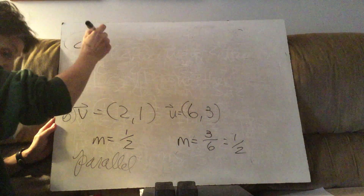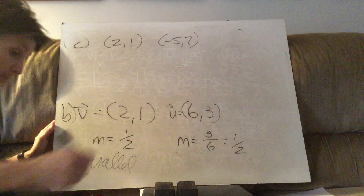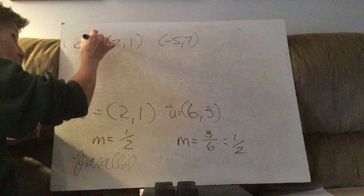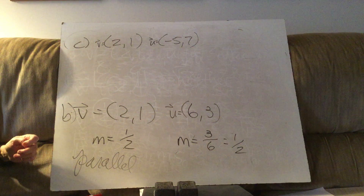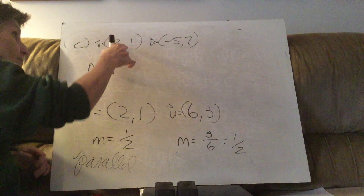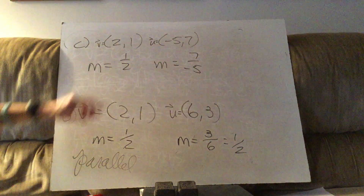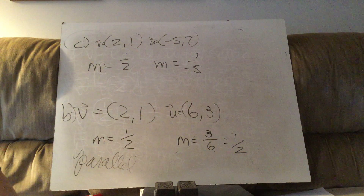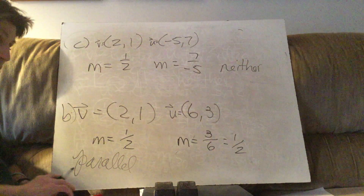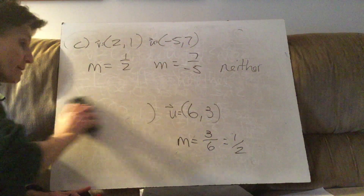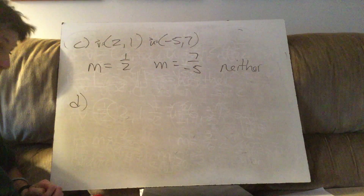Problem C: vectors (2,1) and (-5,7). Slope of the first is 1/2. Slope of the second is 7 over negative 5. Do those have any relationship? No. So this is neither parallel nor orthogonal. If slopes match, we're parallel. If they're opposite reciprocals, we're orthogonal. Otherwise, we are neither.